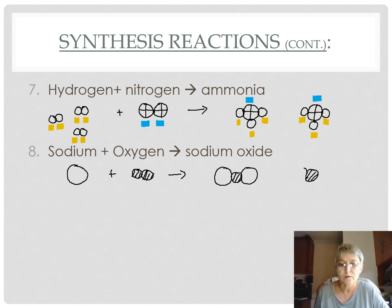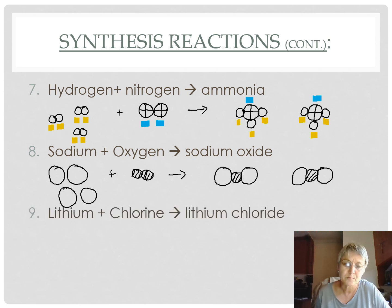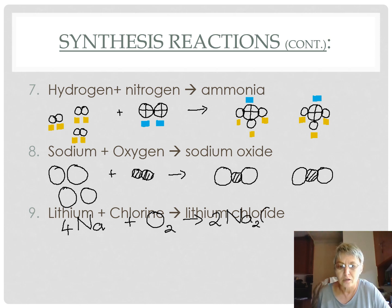I see there's a problem — I need another oxygen on this side, but this oxygen will not come without its sodium. Now I've created a problem with the sodiums and I need four sodium atoms in order to have an equal number on each side of the arrow. In terms of symbols, we need four sodium atoms to join to one oxygen molecule to make two sodium oxide molecules. The ratio is four sodium to one oxygen to two sodium oxide.